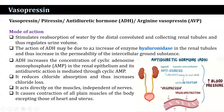The first one, vasopressin, is also known as pitracin or antidiuretic hormone. Its mode of action basically stimulates reabsorption of water by the distal convoluted tubule and collecting renal tubule, and thus regulates urine volume. The action of antidiuretic hormone may be due to an increase of the enzyme hyaluronidase in the renal tubules, thus increasing the permeability of the intercellular ground substance. ADH increases the concentration of cyclic adenosine monophosphate in the renal epithelium, and its antidiuretic action is mediated through cyclic adenosine monophosphate.